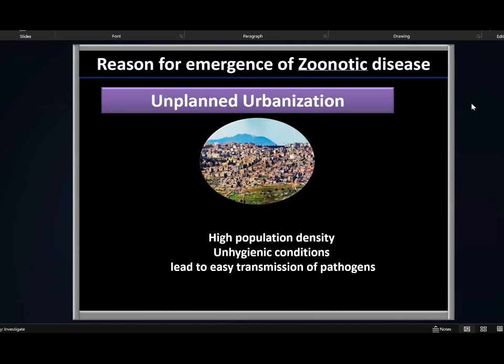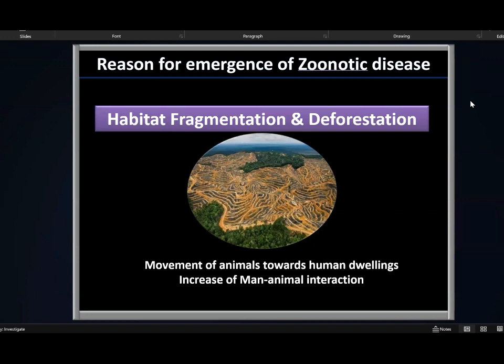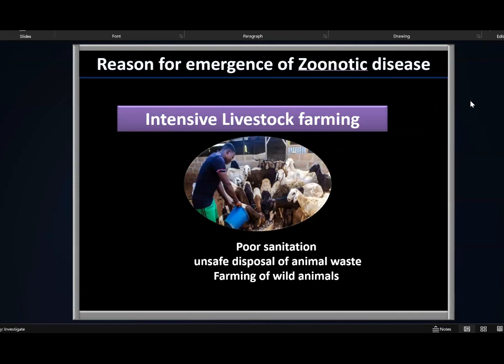The third cause is unplanned urbanization. Unplanned urbanization leads to high population density in certain areas, which makes it very difficult to control various diseases, creates unhygienic conditions, and leads to easy transmission of pathogens because of overcrowding. Habitat fragmentation and deforestation is another cause, because it leads to movement of animals towards human dwellings, increasing interaction between humans and animals, making it easier for pathogens to jump from animals to humans. Intensive livestock farming also increases human-animal interaction, especially when done under poor sanitation conditions, with unsafe disposal of animal waste and farming of wild animals.